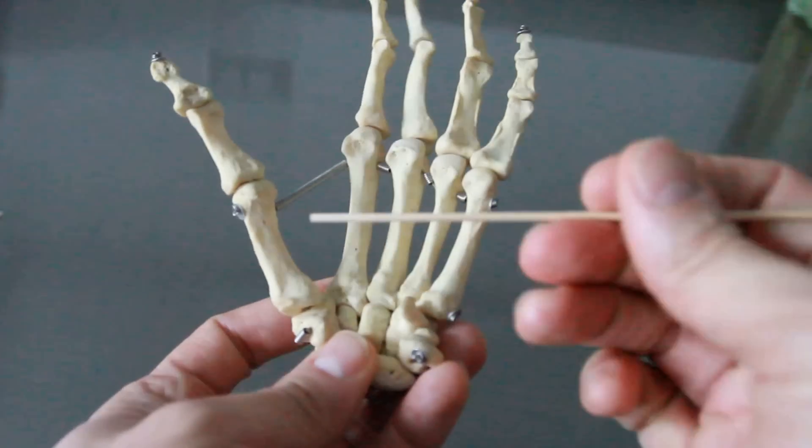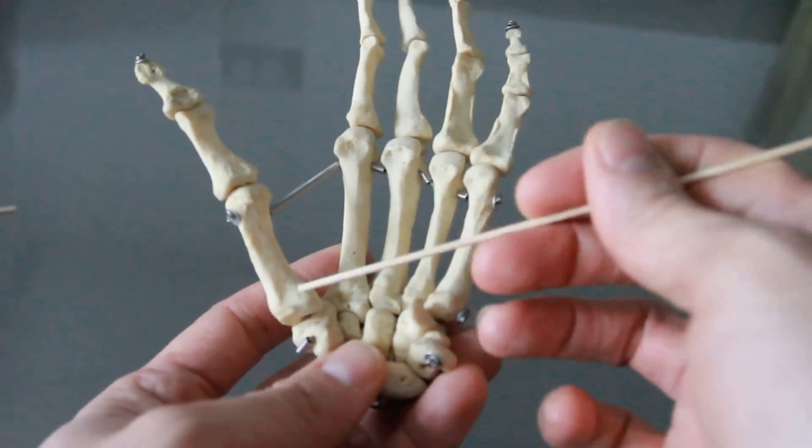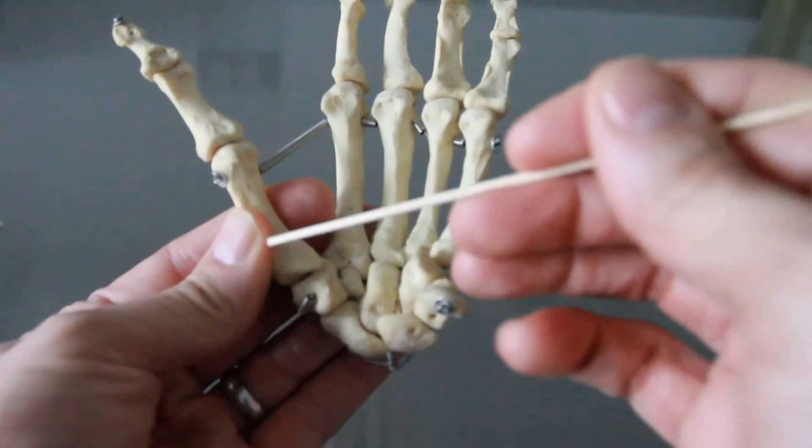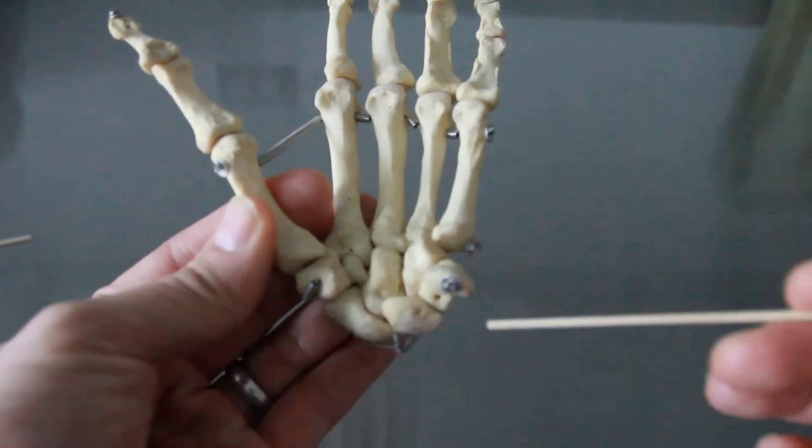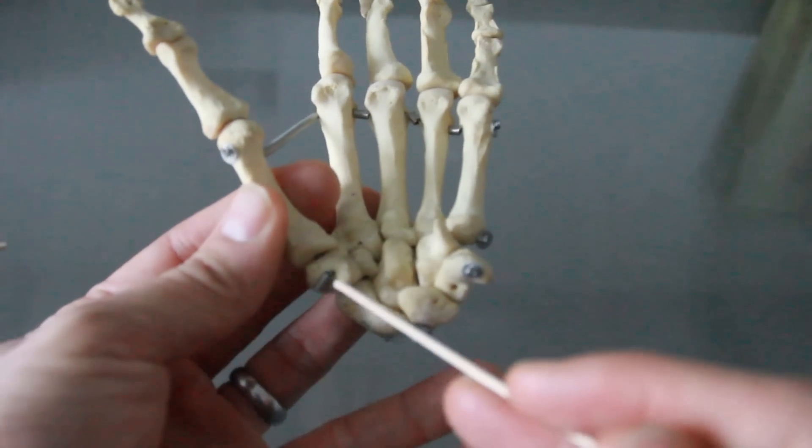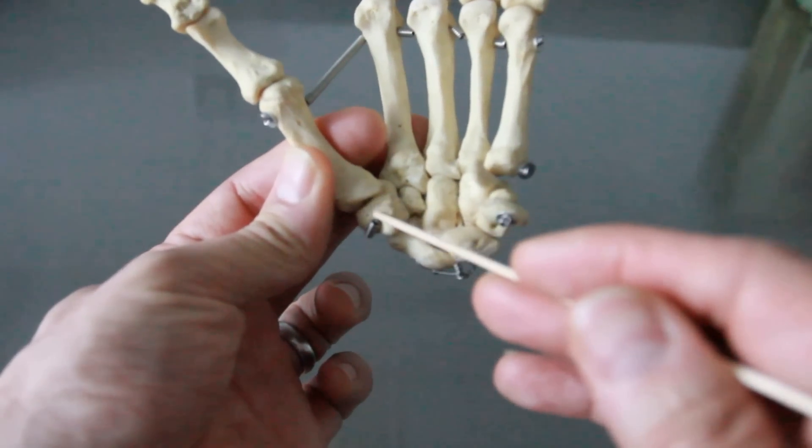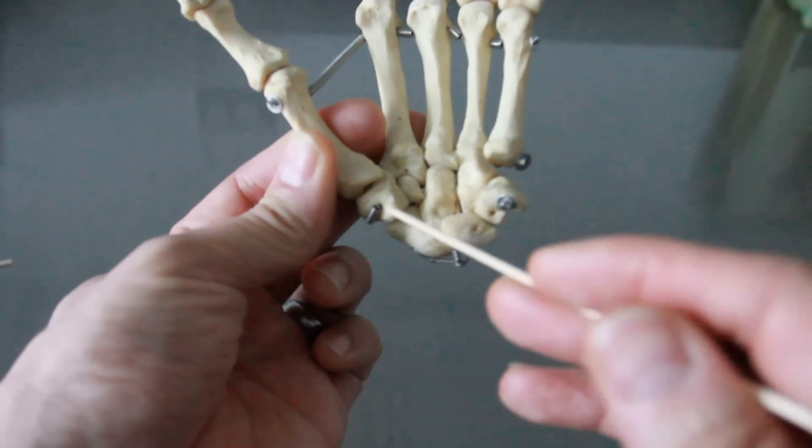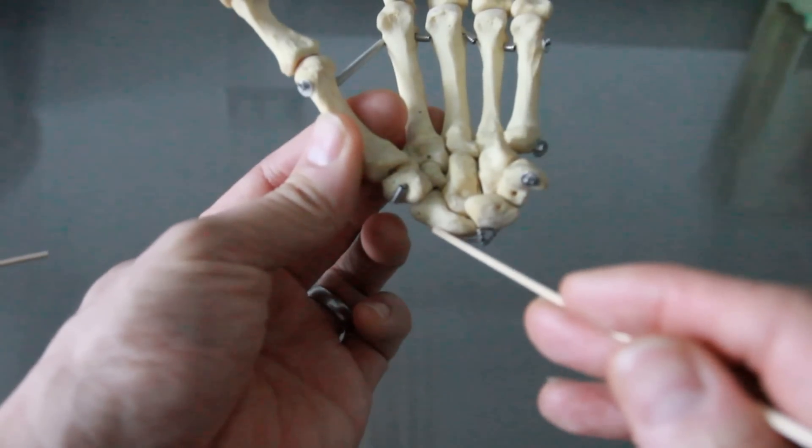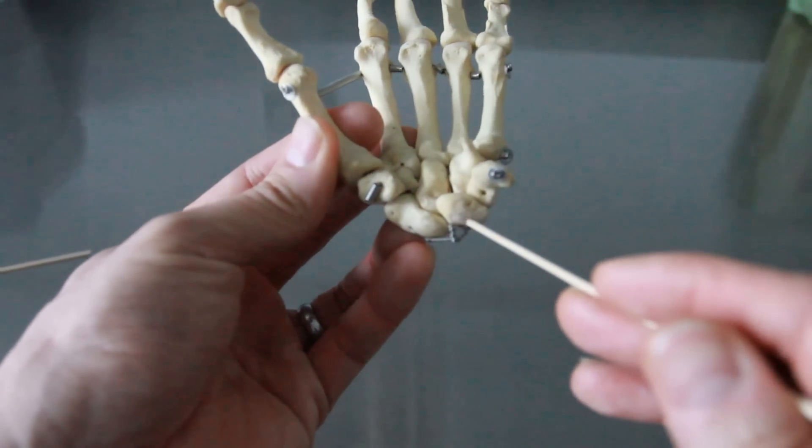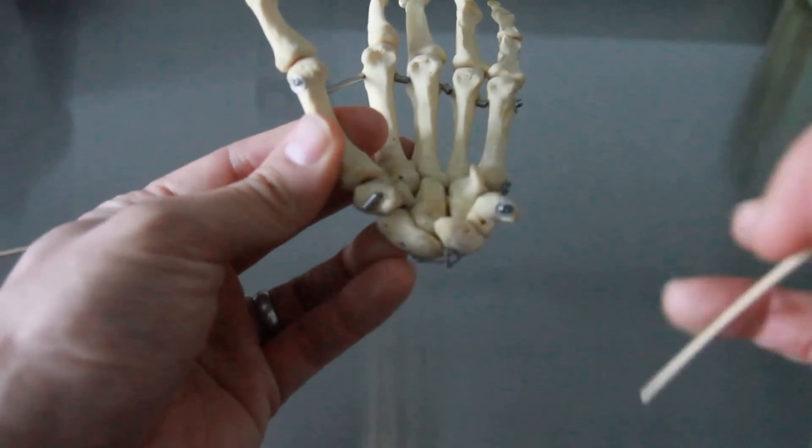Let's start here on the thumb side. We're going to start on the proximal row and go from thumb to pinky, all the way across. So let's start with this guy, this one that's not touching the metacarpal. This is the scaphoid. We're going to go scaphoid, lunate, triquetrum, pisiform. The pisiform kind of always hangs off. You can actually feel it right about here.